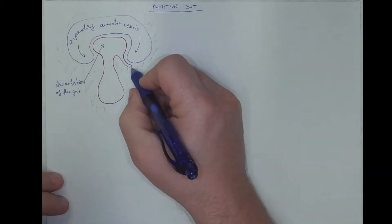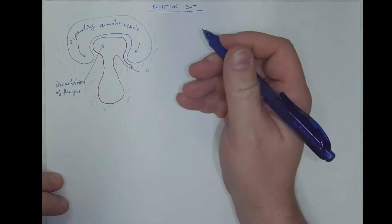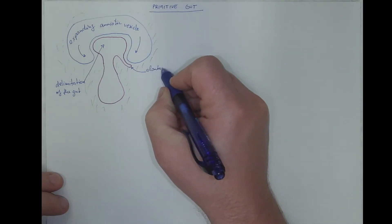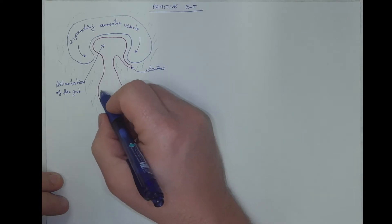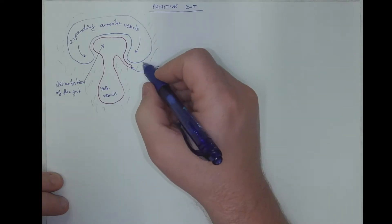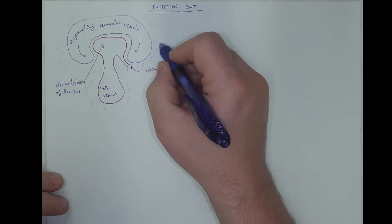This is the blindly ending allantois, a rudimentary fetal membrane, and this is the rest of the yolk vesicle. This would be the extraembryonic mesenchyma.